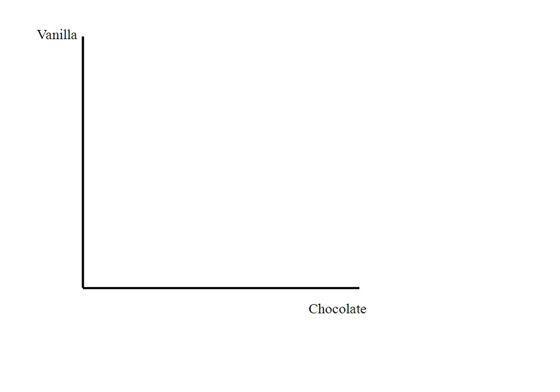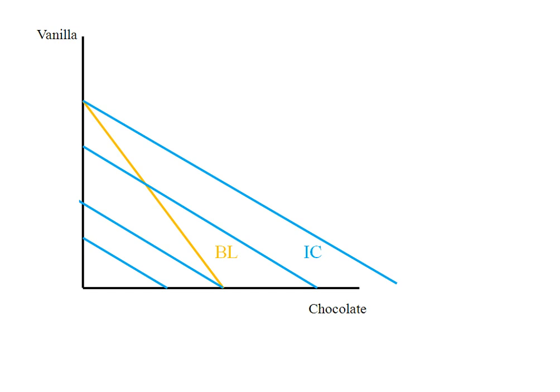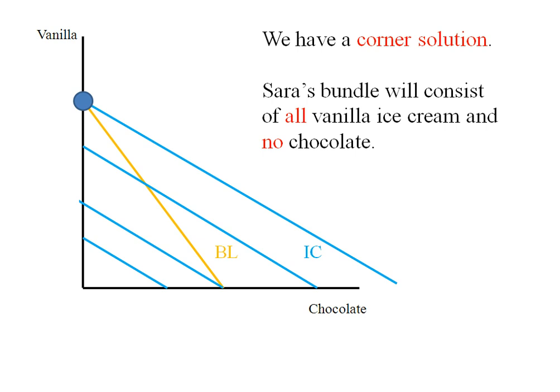Here we have chocolate and vanilla plotted on our axes. I'm going to draw a generic budget line with a slope of negative three, and a generic indifference curve with a slope of negative two. There's a whole range of indifference curves — lower utility closer in, increasing as they go out. We want the highest indifference curve we can reach given our budget, and since the indifference curve is flatter than the budget line, we have a y-axis corner solution right here. So Sarah's optimal bundle is all vanilla ice cream and no chocolate ice cream.